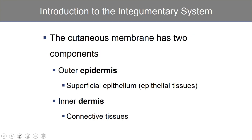The cutaneous membrane has two components. There is an outer epidermis, which consists of an epithelium, and there is an inner dermis, which is connective tissue. Any time you have an epithelial layer, deep to the epithelial layer is always connective tissue. So the epidermis is the epithelial layer, and the dermis is the supportive connective tissue.